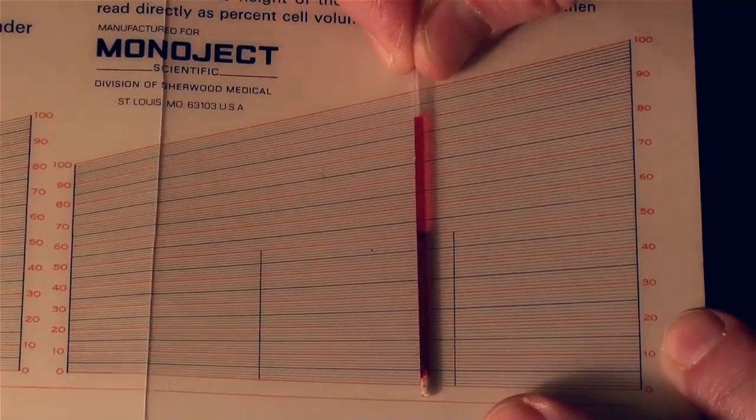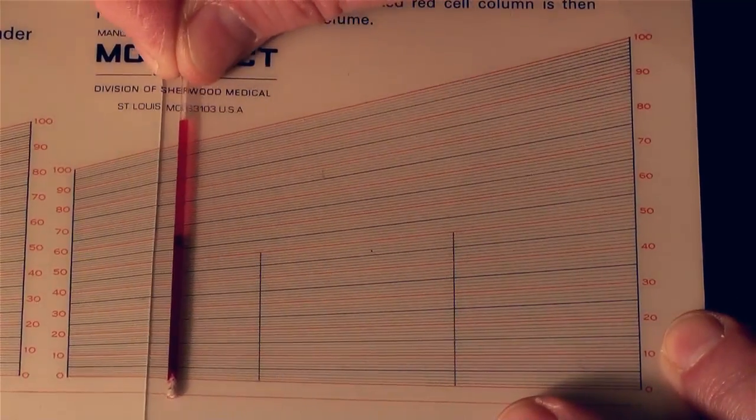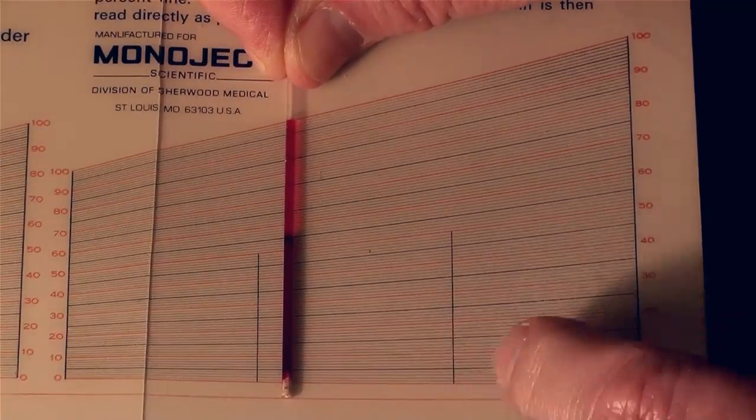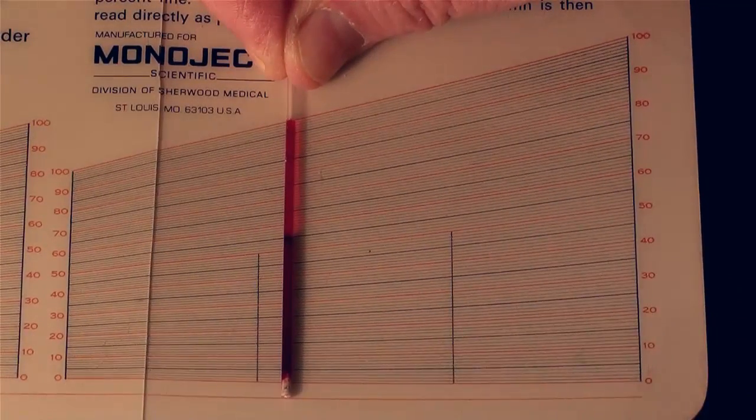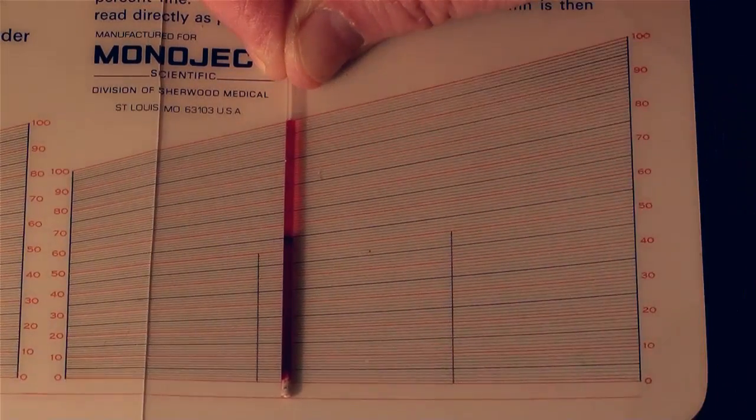In order to do that, I need to slide the tube left and right until the bottom of the blood is on the zero line and the top of the blood is on the hundred line.